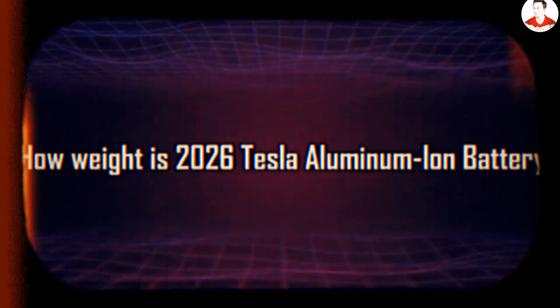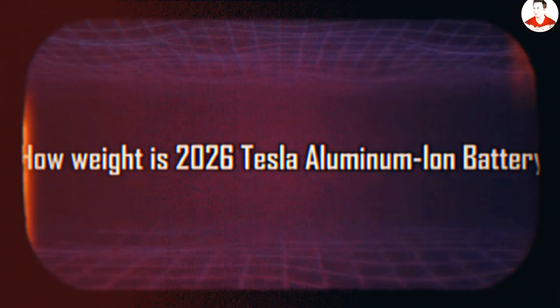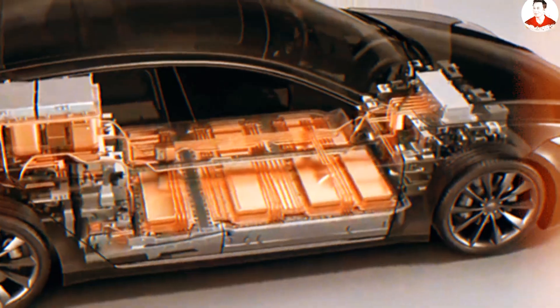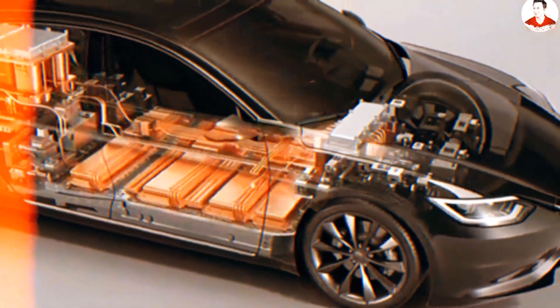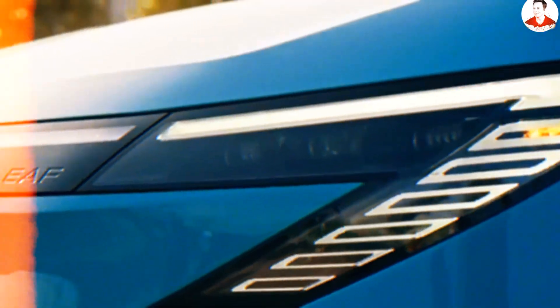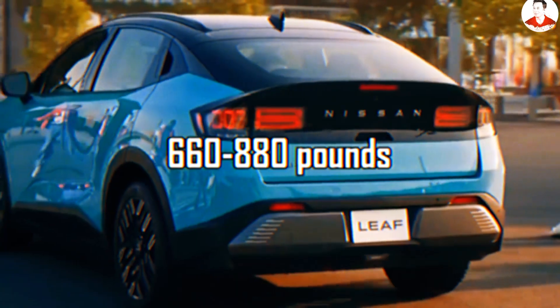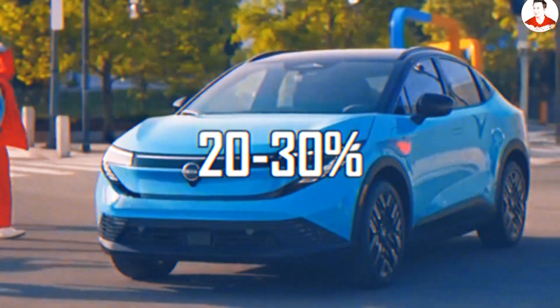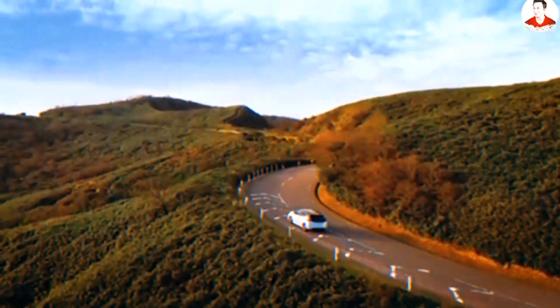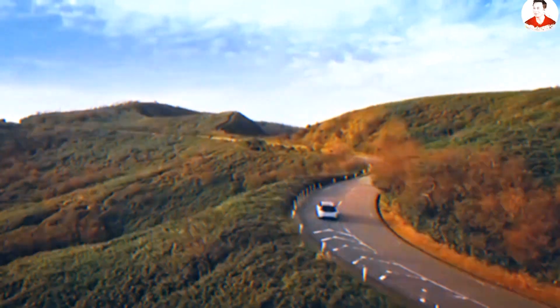How weight is 2026 Tesla aluminum-ion battery that makes it a radical weight savings? Here's the brutal truth about battery weight that's been killing affordable electric vehicles. Lithium-ion batteries in compact EVs like the Nissan Leaf weigh between 660 to 880 pounds, making up 20 to 30 percent of a vehicle's total weight.